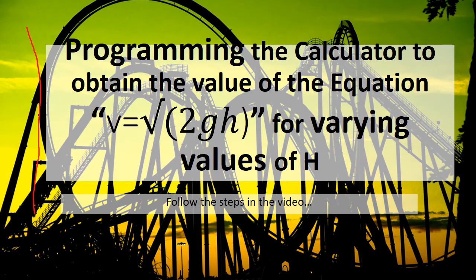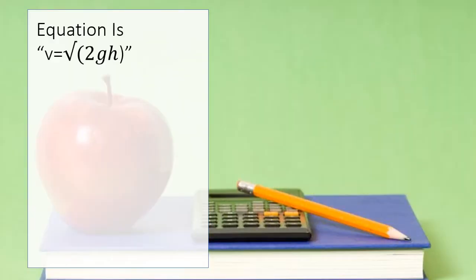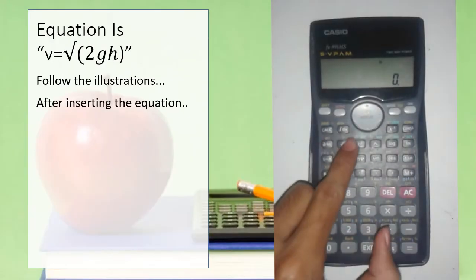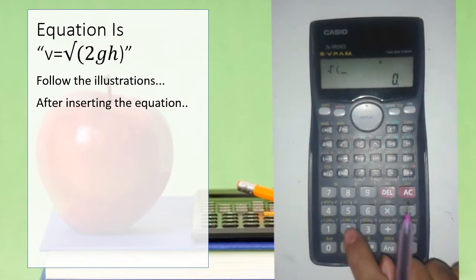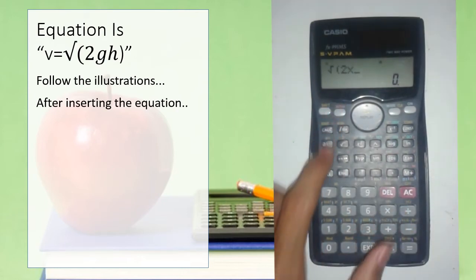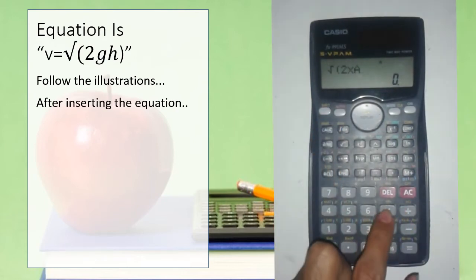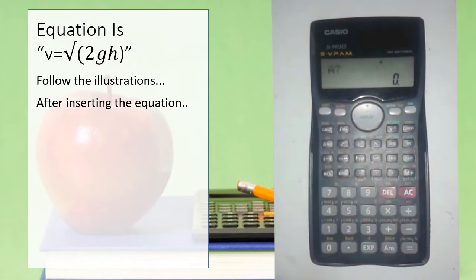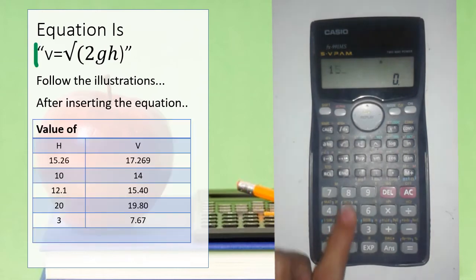Programming the calculator for equation v equals square root of 2gh. This is commonly used for velocity and height. Insert root sign, open parenthesis, 2 into alpha a and alpha b, close parenthesis. Here a is g and b is h.